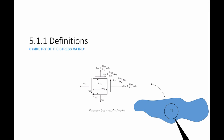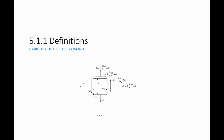Looking at the cube under the microscope and taking moments around a corner while ignoring small higher-order terms, if the sum of moments equals zero, we find that σ12 minus σ21 equals zero, meaning σ12 equals σ21. Repeating in the other directions, we also find σ31 equals σ13 and σ23 equals σ32. This means the stress matrix is a symmetric matrix, a consequence of the moment equilibrium of the material.